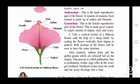Gynoecium: This is the female reproductive part of the flower, made up of carpels. A carpel consists of stigma, style, and ovary. These are the three parts of the carpel. Take a vertical section of the hibiscus flower with a sharp blade by cutting the flower vertically from stigma to pedicel. Both sections will show the same structure. If you cut the hibiscus flower exactly vertically, you will see all the parts.